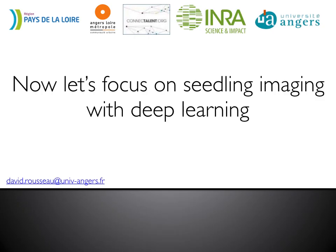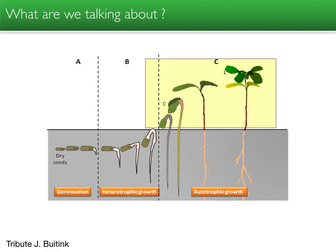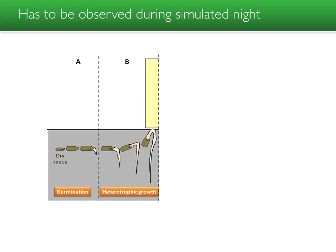Now let's focus on seedling imaging with deep learning. What are we talking about exactly? We're talking about the very early stages of plant development: germination into the soil, heterotrophic growth where the seed absorbs water from the soil by developing its roots and popping out of the soil, and then activation of photosynthesis via the appearance of the first leaves.